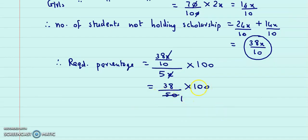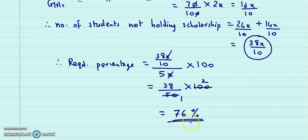Simplifying further: 50 goes into 100 twice, so we get 38 into 2, which is 76. Therefore, 76% of students do not hold scholarship.